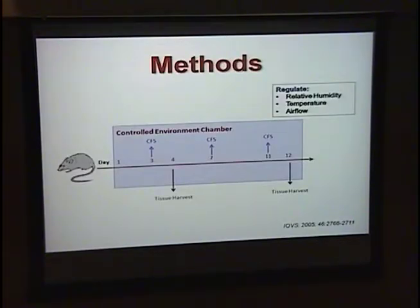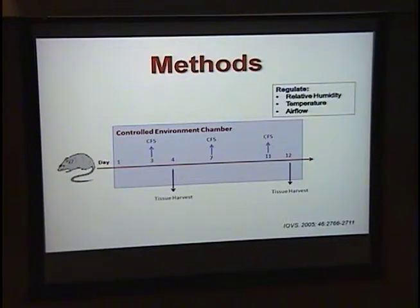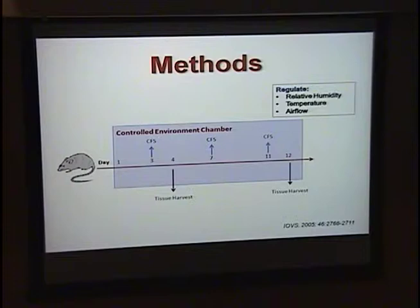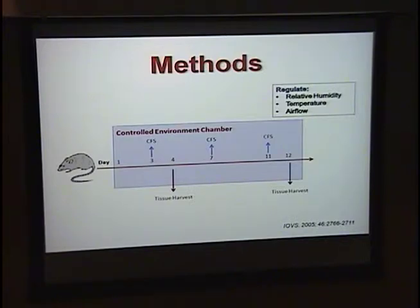The lab has developed a validated model of dry eye disease where we take naive mice and place them in a controlled environment chamber. We regulate environmental factors such as humidity, temperature, and airflow. We also inject them with an anti-muscarinic drug, scopolamine, to further dry aqueous secretions. During this time period, we check the clinical fluorescein-staining score at regular intervals to confirm the induction and maintenance of dry eye disease.